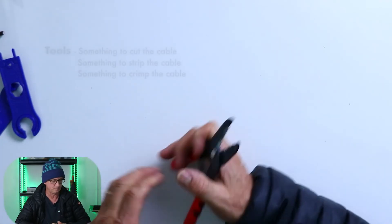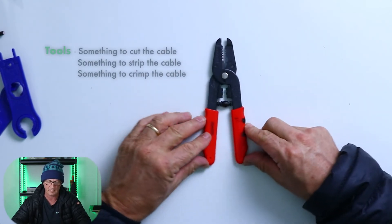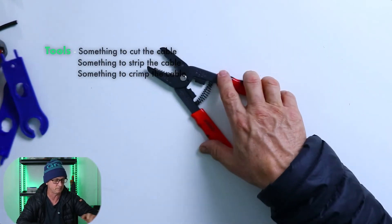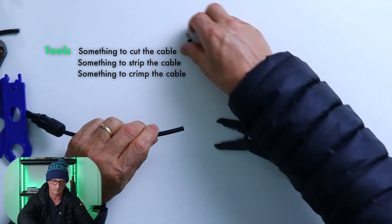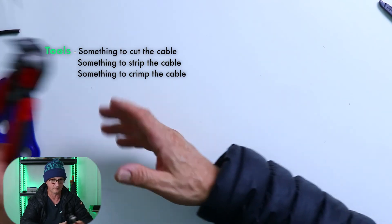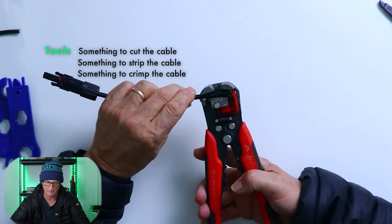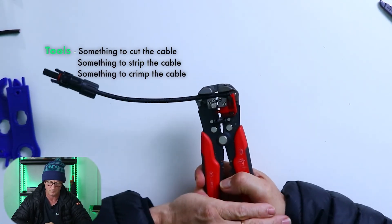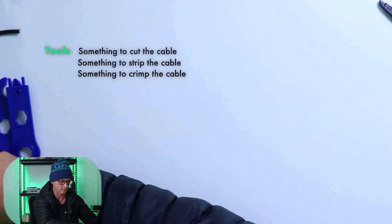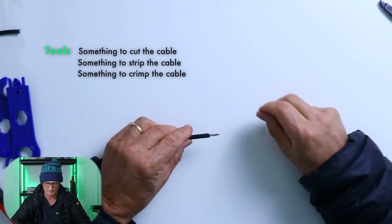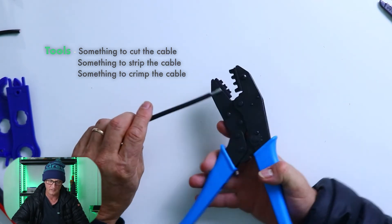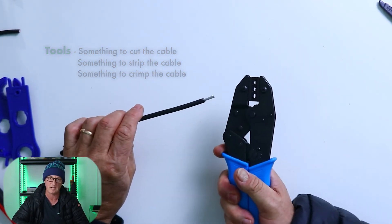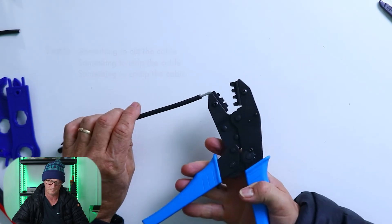So, let's go over the tools one more time. The first tool, something to cut the cable. Then, something to strip the cable. Then, something to crimp the cable.